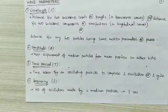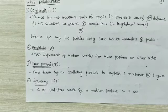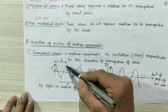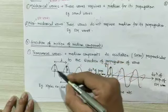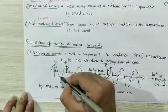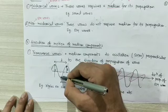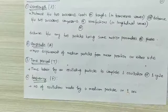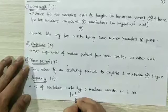The third parameter is time period: the time taken by an oscillating particle to complete one oscillation or one cycle. Consider any particle on the wave — it will do SHM, going from one extreme to the other and back. That time interval is called the time period. The fourth parameter is frequency: the number of oscillations made by a medium particle in one second. Mathematically, frequency equals one divided by the time period.